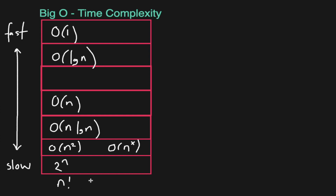If you haven't seen a factorial before: 5 factorial would be 5 × 4 × 3 × 2 × 1. Comparing to n² — if n is 5, n² would be 25, but 5 factorial is 120. So you can see that factorial time complexity is much worse. Similarly, 2 to the power of 5 is 32, which is bigger than 25. And this is especially true as the numbers get bigger and bigger.